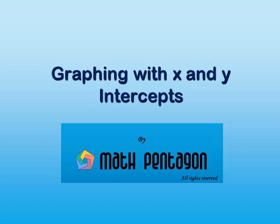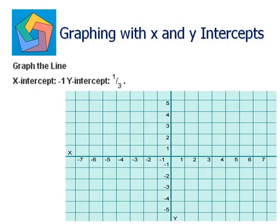Hi, today we are going to learn about graphing with x and y-intercepts. Let's look at a problem. Graph the line where the x-intercept is negative 1 and the y-intercept is 1 by 3. So we need to graph a line whose x-intercept is negative 1 and y-intercept is 1 by 3.